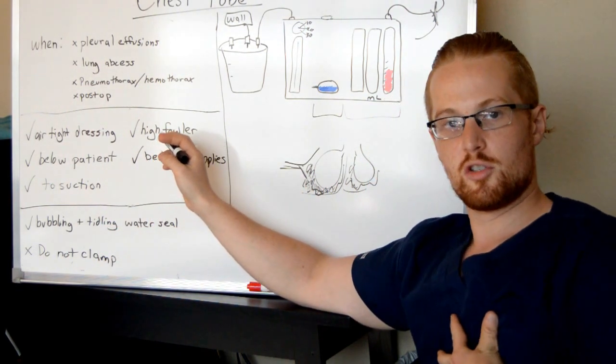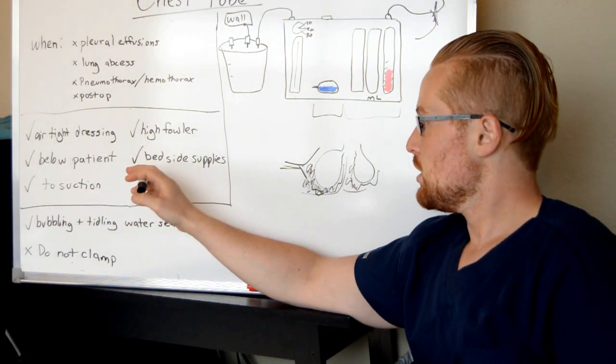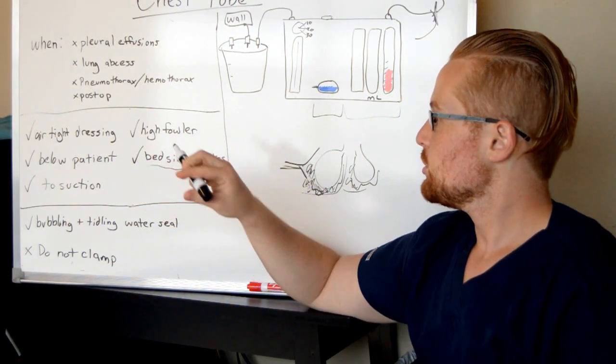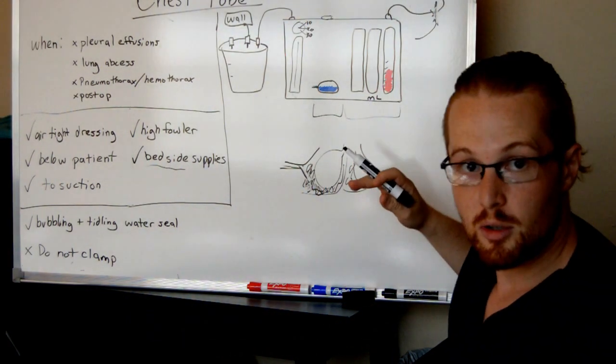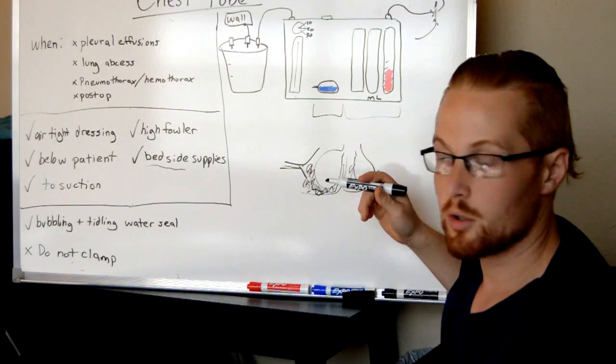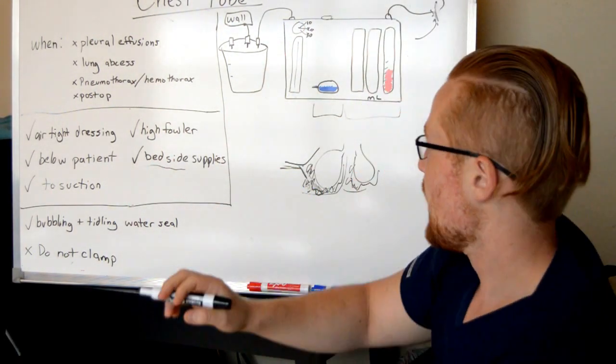You want to have the patient in a high-Fowler position, so as you pull the fluids out, the lungs can drop and fill up that space. And you're going to want some supplies at the bedside. What you want to keep is an extra occlusive dressing. If this were to get ripped out of the patient for some reason, the patient were to get up on their own and fall, you'd want to put an airtight dressing right on their skin to cover up the hole that goes into that cavity.